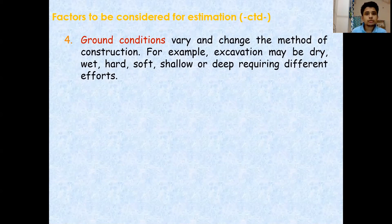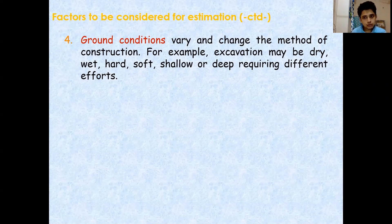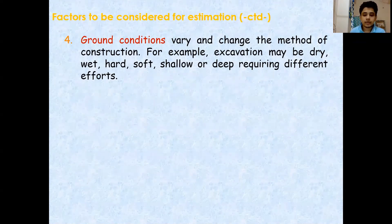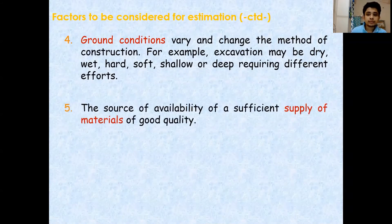Point number four is ground conditions. Ground conditions means whether the ground is dry, hard, or soft at the construction site. Depending on the site condition, the requirements will be different, and obviously the estimation will be different as well.